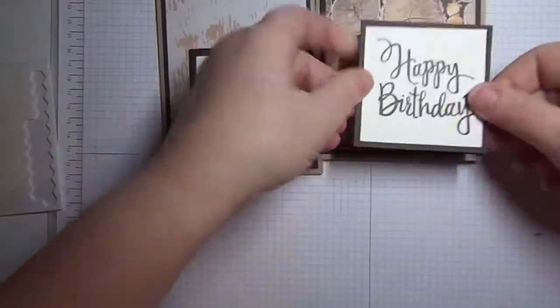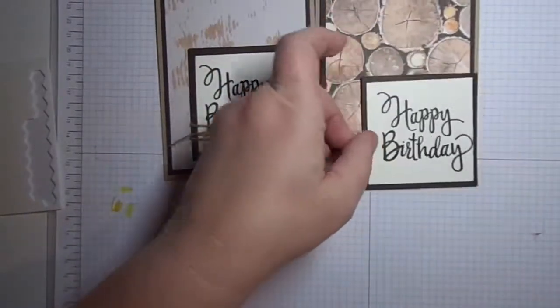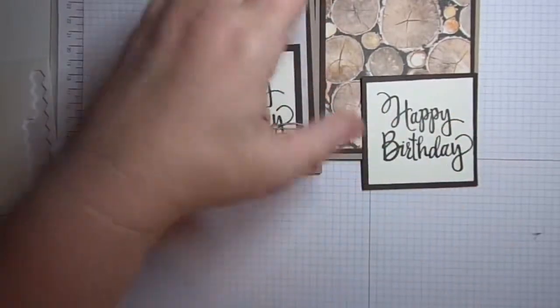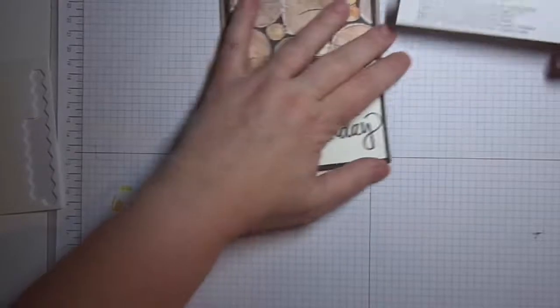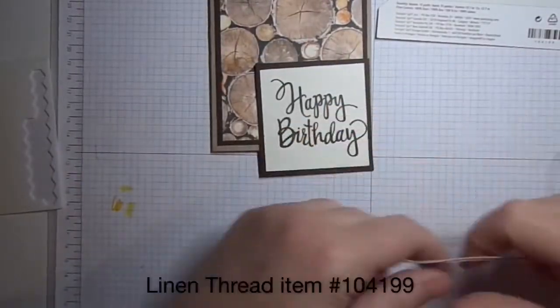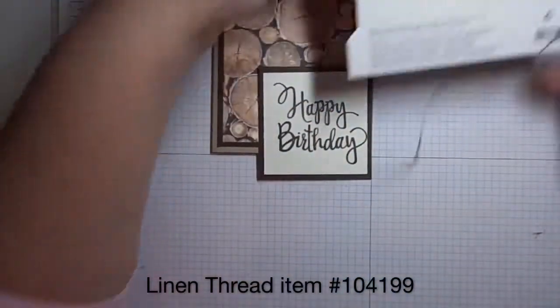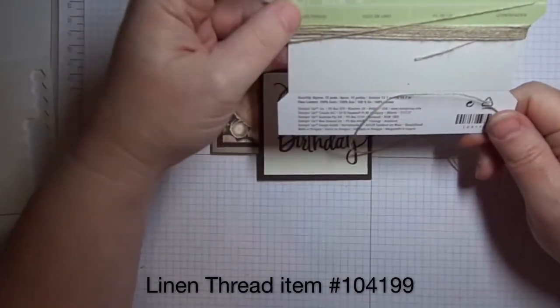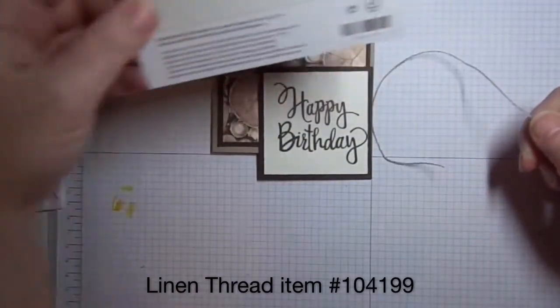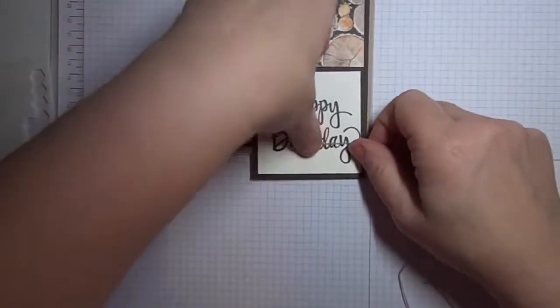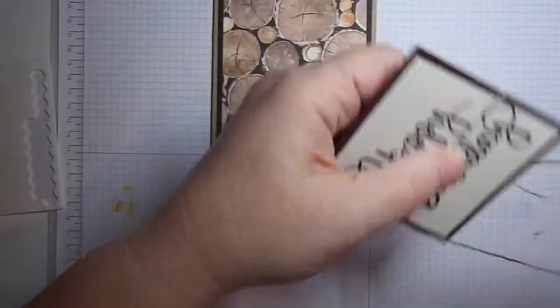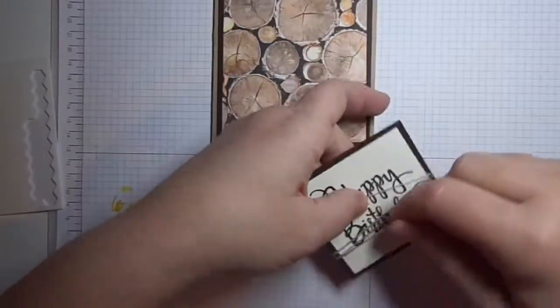And that's what I'll use to adhere it onto there, but before I do that, I have a length of— I believe this was 30 inches, let me look at my note— yep, this was 30 inches of our linen thread. You can see I've used a lot of it. It's inexpensive but it's a lot of bang for the buck. So I'm going to wrap this around two, three times, nothing fancy.